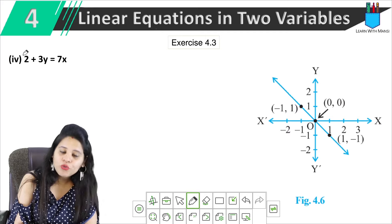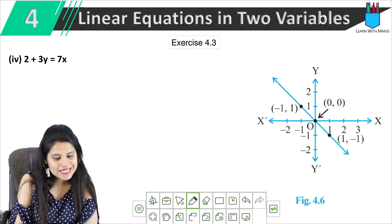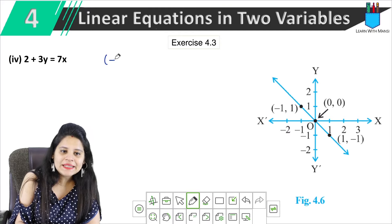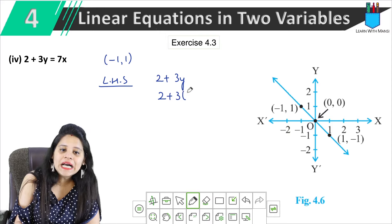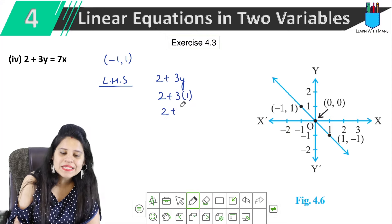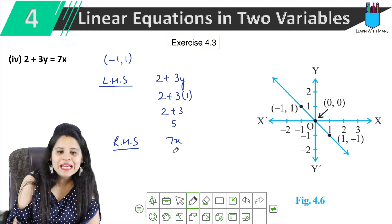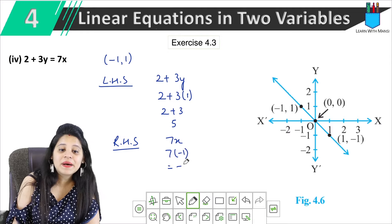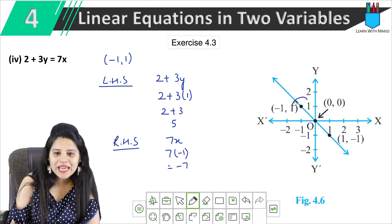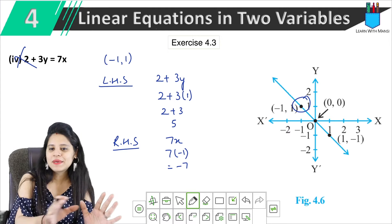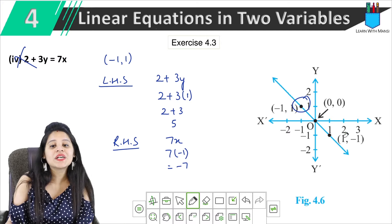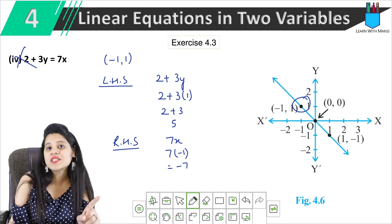In the fourth part, the equation is 2 plus 3y equals to 7x. We take the point (-1, 1). Left hand side: 2 plus 3 times 1 equals 2 plus 3, which is 5. Right hand side: 7 times minus 1 equals minus 7. Since 5 is not equal to minus 7, the point is not satisfied. So this equation does not match the graph either.